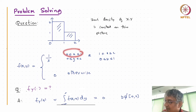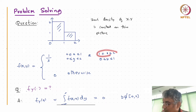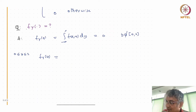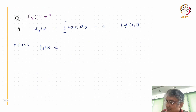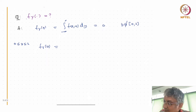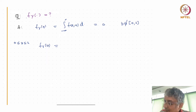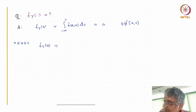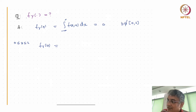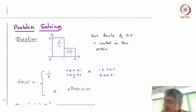One part is when x is between 0 and 1; the other part is when x is between 1 and 2 and y is in [0, 1]. So we split the integral into two parts, integrating f(x, y) dx.